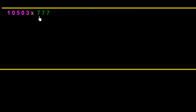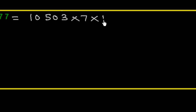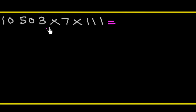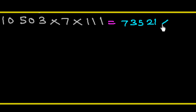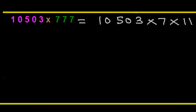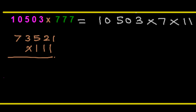Next example: 10503 × 777. The multiplier has similar digits, so we factorize 777 into 7 × 111, writing 10503 × 7 × 111. Multiplying 10503 × 7: 7×3=21, write 1 carry 2; 7×0=0; 7×5=35; 7×0=0; 7×1=7. So 10503 × 7 = 73521. Now we multiply 73521 × 111.